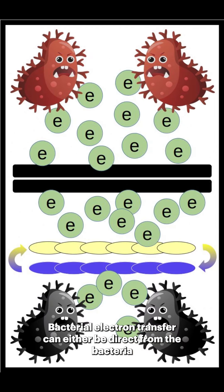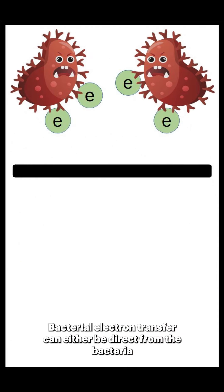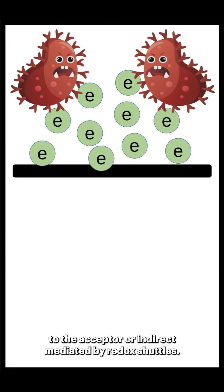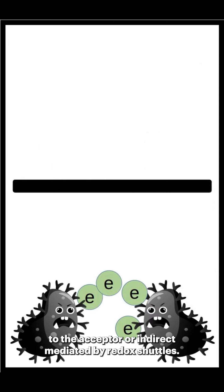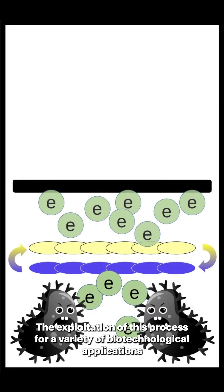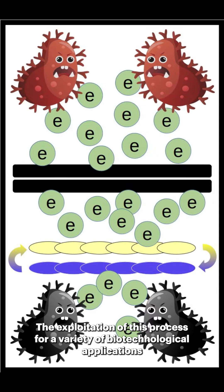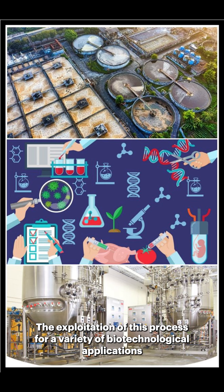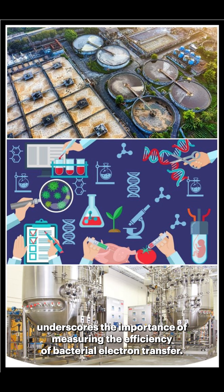Bacterial electron transfer can either be direct from the bacteria to the acceptor, or indirect, mediated by redox shuttles. The exploitation of this process for a variety of biotechnological applications underscores the importance of measuring the efficiency of bacterial electron transfer.